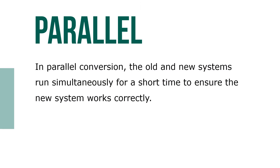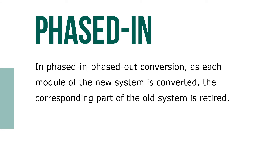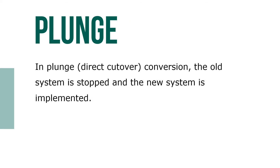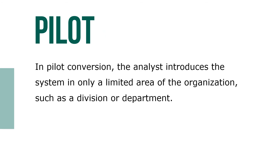In parallel conversion, the old and new systems run simultaneously for a short time to ensure the new system works correctly. In phased-in, phased-out conversion, each module of a new system is converted and the corresponding part of the old system is retired. In a plunge or direct cut-over conversion, the old system is stopped and the new system is implemented. In a pilot conversion, the analyst introduces the system in only a limited area of the organization, such as a division or a department.